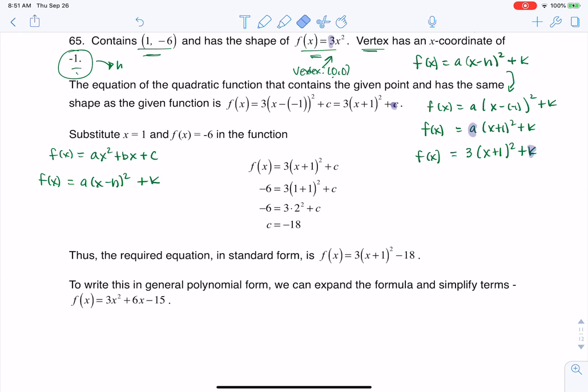Alright, so the last thing I want to do so I can find my k value, I'm actually going to use this—I keep saying that—I'm going to use (1, -6). So let's plug 1 into the function, and we know that's equal to negative 6, and that's going to allow me to solve for k, or over here it's going to allow me to solve for c.